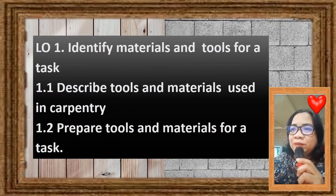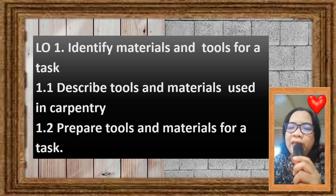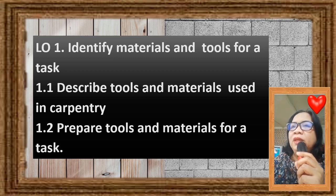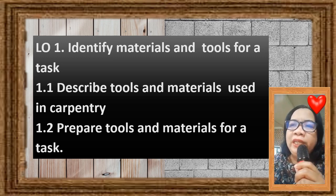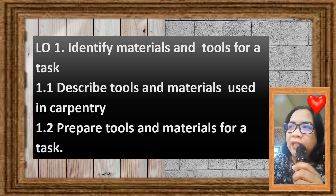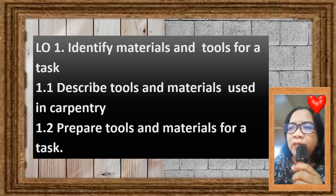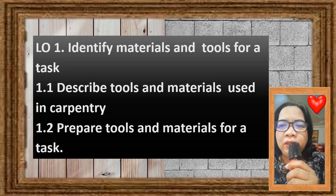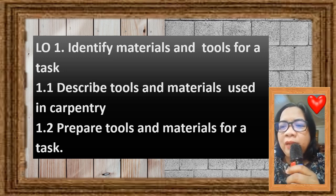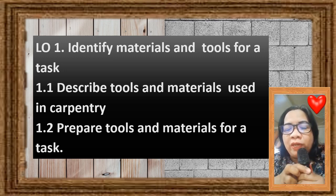Let us be guided with the learning outcome of this lesson. Learning outcome number one: identify materials and tools for a task. One point one: describe tools and materials used in carpentry. One point two: prepare tools and materials for a task.